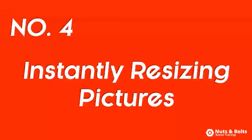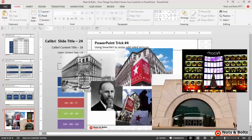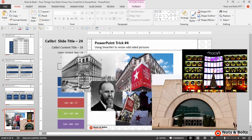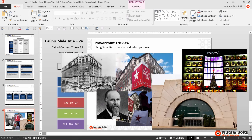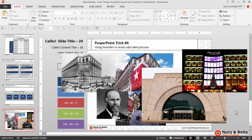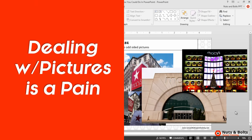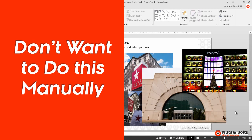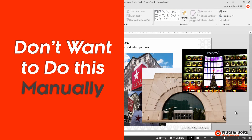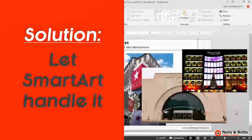And finally, number four — my personal favorite — quickly resizing and cropping odd-sized pictures. For this last example I have a number of odd-sized photos in different sizes and shapes. What I want to do is resize and crop them so they're all the same size and shape and use them to build my layout. But as resizing and cropping photos can be a real pain, I don't want to do any of it manually. I can quickly do this using SmartArt.